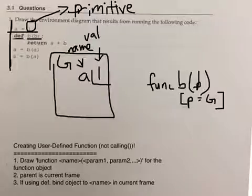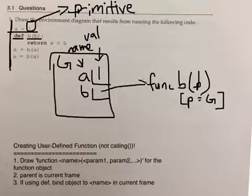And finally, since we're using def instead of a lambda, we need to bind the object to the same name in the current frame. So now B points to func B. Now we're done with the def step. Notice how I did not go into the body.